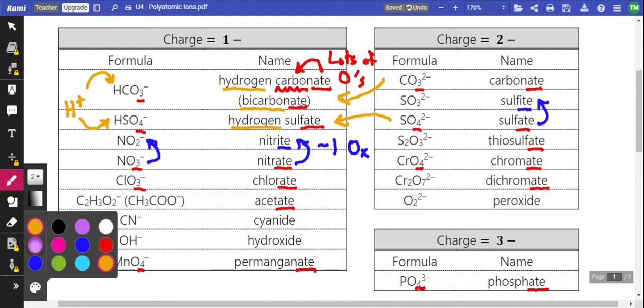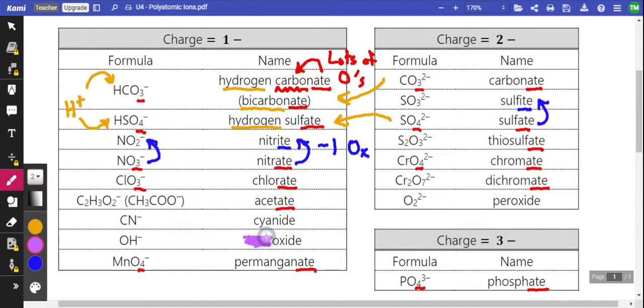Okay. If you were to ignore this hydro part, I'm just going to kind of cover that up for a second. What we have is oxide. Well, oxide would be like if you have oxygen in an ionic compound, which usually has a negative two charge.